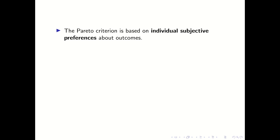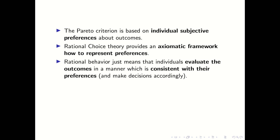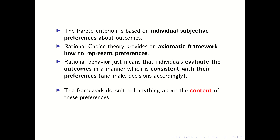As mentioned, the Pareto criterion is based on individual subjective preferences about outcomes. In economics, we have a good axiomatic theory of preferences. The most famous framework draws back to von Neumann and Morgenstern from the 1940s. Rational choice theory — also called expected utility theory — is based on this framework. Rational behavior means that individuals evaluate outcomes in a manner consistent with their preferences and make decisions accordingly. It is a consistency requirement. It does not tell anything about the content of these preferences — and that is a very important point.